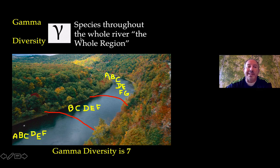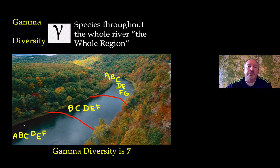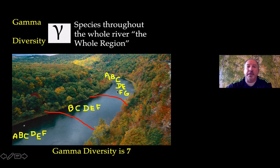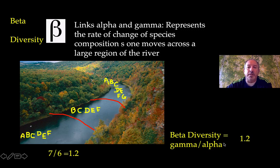There's also something called gamma diversity, represented by the Greek letter gamma — it's the total number of different species throughout the whole region. Looking across the river, species A through G gives us seven different species total — so gamma diversity is seven. Beta diversity is gamma divided by alpha, and represents the rate of change in species composition as you move across a region. Taking gamma (7) divided by alpha (6), the beta diversity is approximately 1.2.